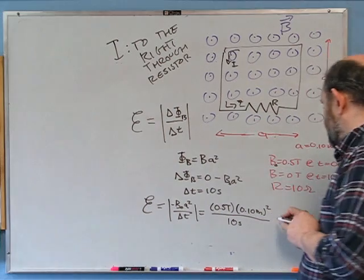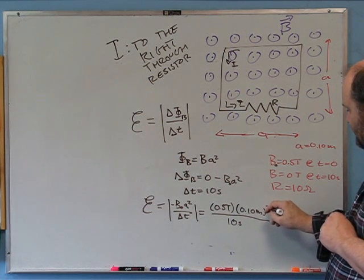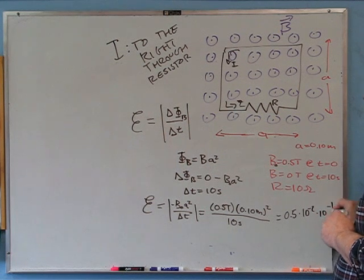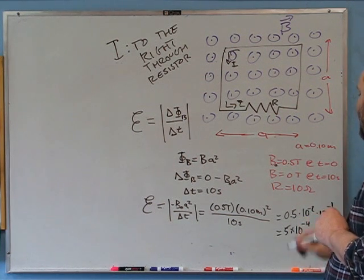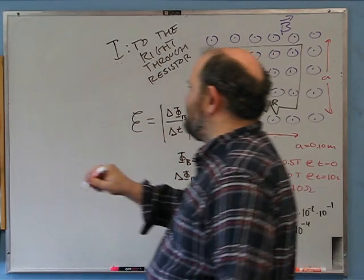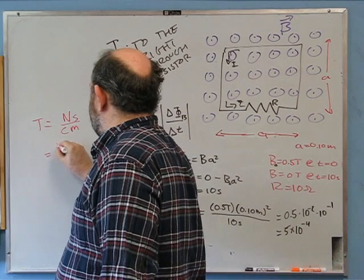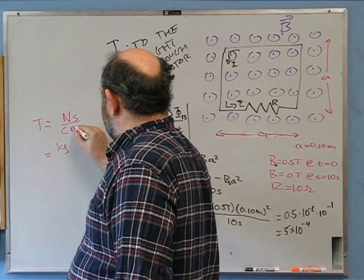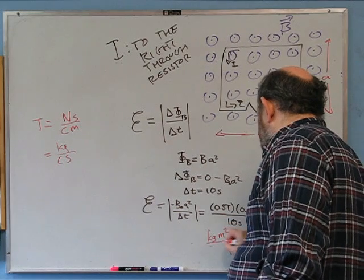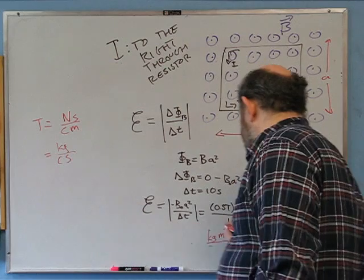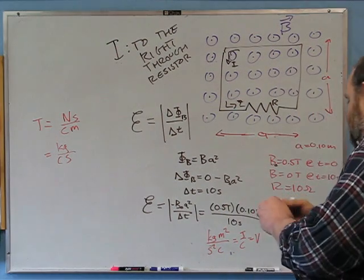Working this out: 0.5 × 0.01 / 10 = 5 × 10⁻⁴. For units: a tesla is newton·second per coulomb·meter, and a newton is kilogram·meter per second squared, so everything works out to kilogram·meter² per second² per coulomb — joules per coulomb — which is volts. So the EMF is 5 × 10⁻⁴ volts.